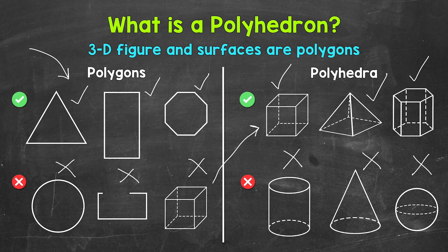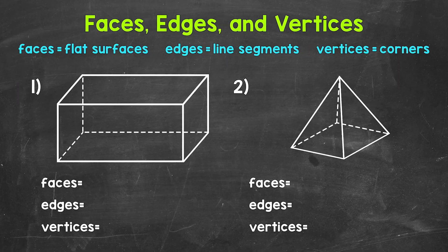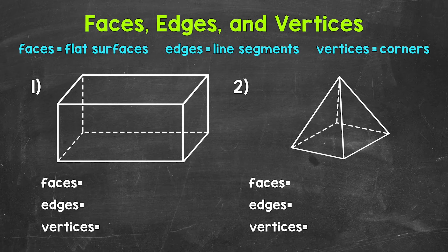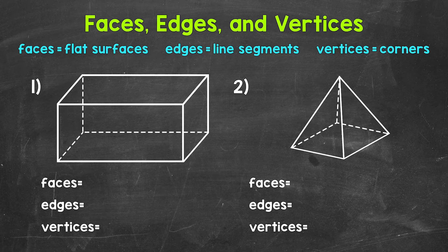Let's move on to faces, edges, and vertices. Faces are the flat surfaces that make up a solid figure — a 3D figure. Edges are the line segments that are formed by two faces meeting. And then vertices, which is the plural form of vertex, are the corners or points. Vertices are formed by three or more edges meeting. Let's jump into our examples and identify and count the number of faces, edges, and vertices for both of our examples.